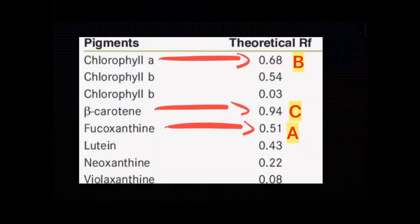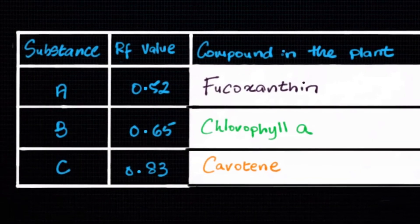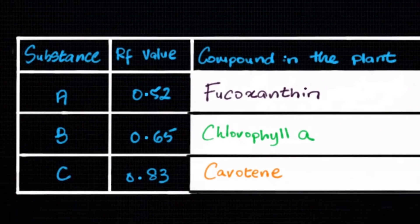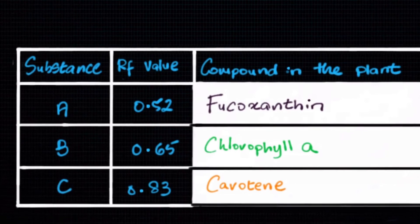Then we will compare it to a standard RF chart, where we will find the compounds with the closest RF values to ours. Plant A has the compound fucoxanthin, plant B has the compound chlorophyll A, and plant C has the compound keratin.